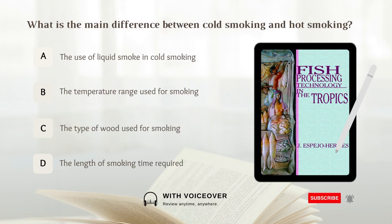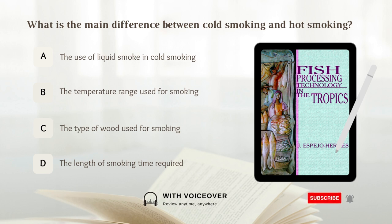What is the difference between cold smoking and hot smoking? A. The use of liquid smoke in cold smoking. B. The temperature range used for smoking. C. The type of wood used for smoking. D. The length of smoking time required. Answer: B. The temperature range used for smoking.